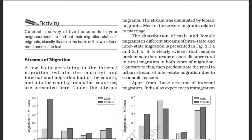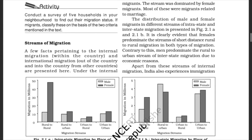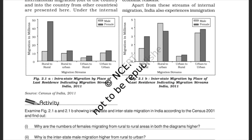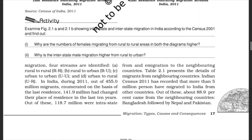It is clearly evident that females predominate the streams of short-distance rural to rural migration in both types of migration. Contrary to this, men predominate the rural to urban stream of interstate migration due to economic reasons. Apart from these streams of internal migration, India also experiences immigration from and emigration to neighboring countries. Table 2.1 presents the details of migrants from neighboring countries. The Indian Census 2011 has recorded that more than 5 million persons have migrated to India from other countries, of which about 88.9% came from neighboring countries — Bangladesh, followed by Nepal and Pakistan.